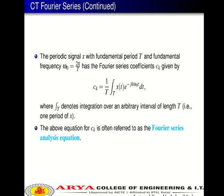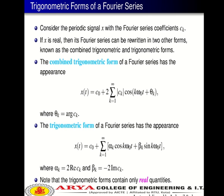The periodic signal X with fundamental period T and fundamental frequency ω₀ = 2π/T has Fourier series coefficients Cₖ given by: Cₖ = (1/T) ∫_T X(t) e^(−jkω₀t) dt, where integration over T denotes integration over any arbitrary interval of length T, that is one period of X. This equation for Cₖ is often referred to as the Fourier series analysis equation.